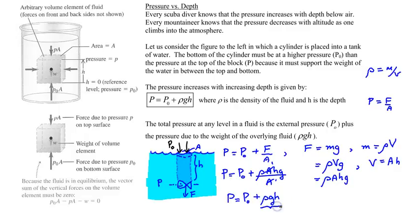And this rho g h term is typically called the hydrostatic pressure. So that would be the pressure if we were to assume that the external pressure at the surface of the water was zero, like a vacuum.